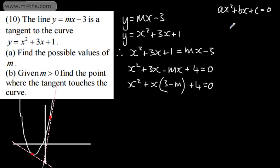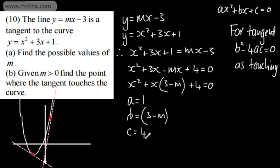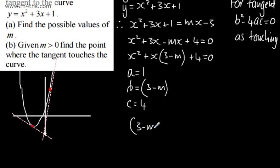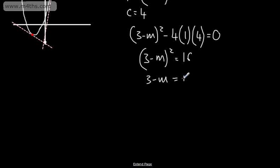So we have x squared plus (3 minus m)x plus 4 equals 0. For tangent, b squared minus 4ac equals 0, as it's touching. Identifying values: a is 1, b is (3 minus m), and c is positive 4. So b squared is the quantity (3 minus m) all squared, minus 4 times 1 times 4, equals 0. Adding 16 to both sides: (3 minus m) all squared equals 16. Taking the square root: 3 minus m equals plus or minus 4. So m equals 7 or m equals negative 1.